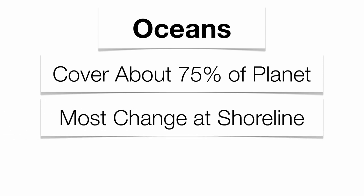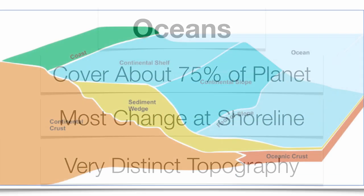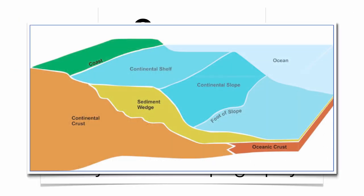Most of the change within the oceans can be found right along the shoreline. Let's start out with the topography that's underwater. You have a good portion of the continent underwater called the Continental Shelf. That will give way to the continental slope, which is kind of the end of the continent underwater, which gives rise to the Abyssal Plain — the beginning of the deep water section of our oceans.